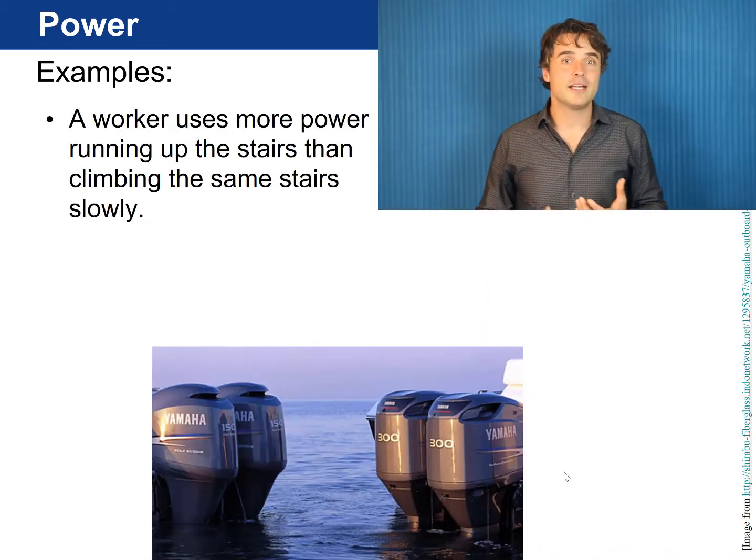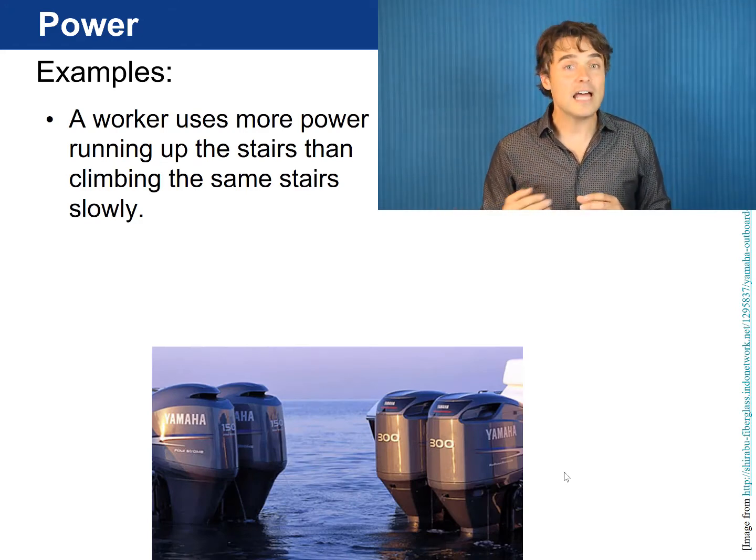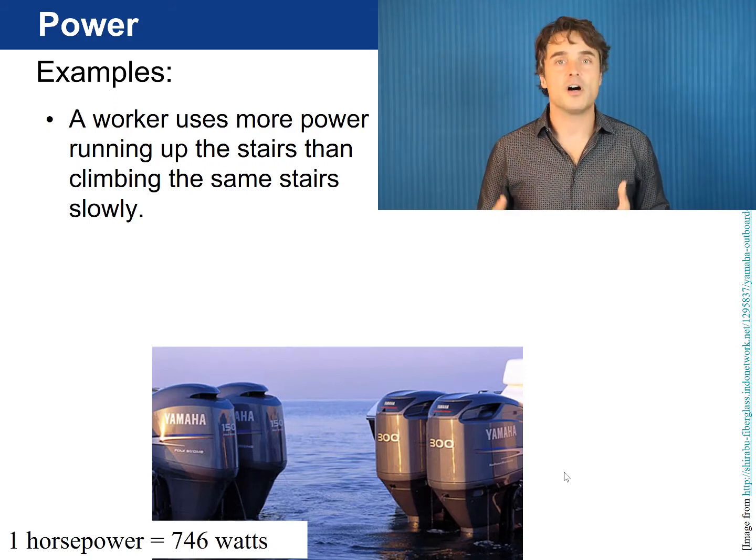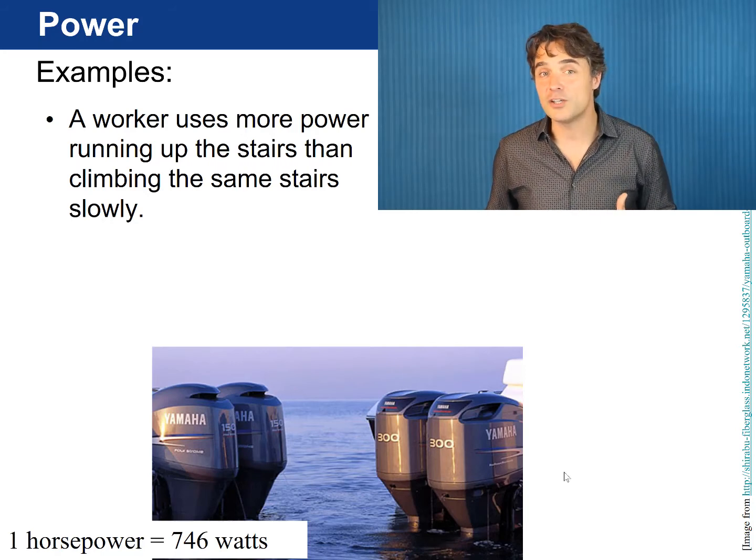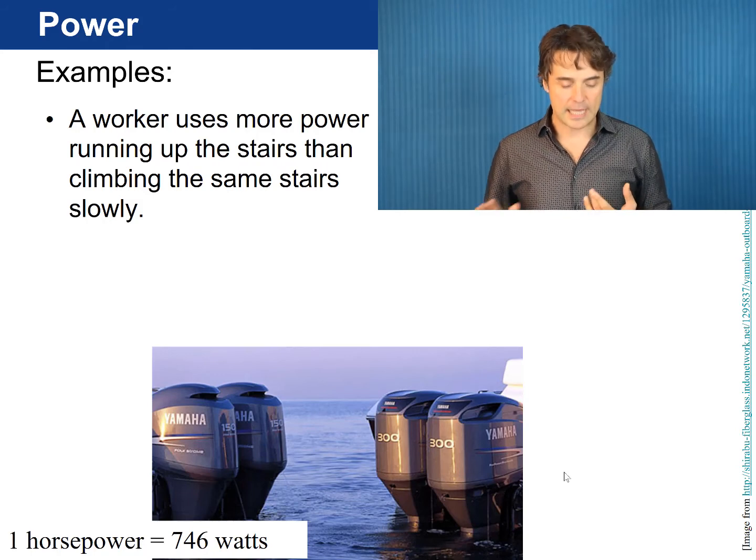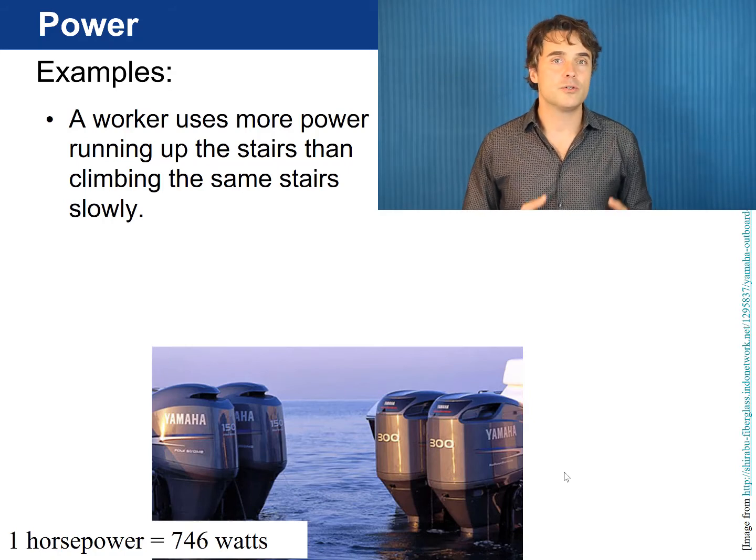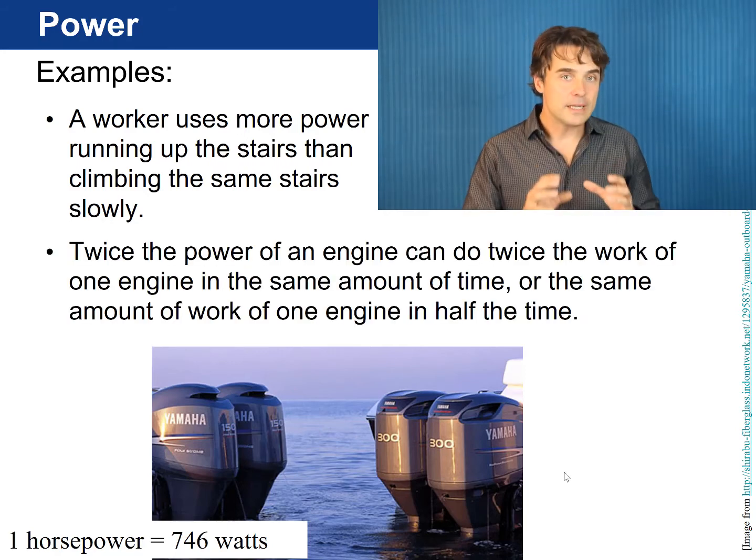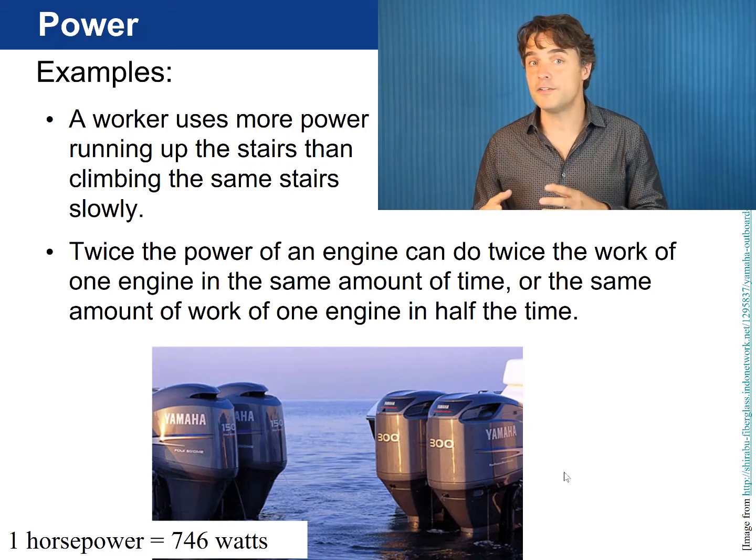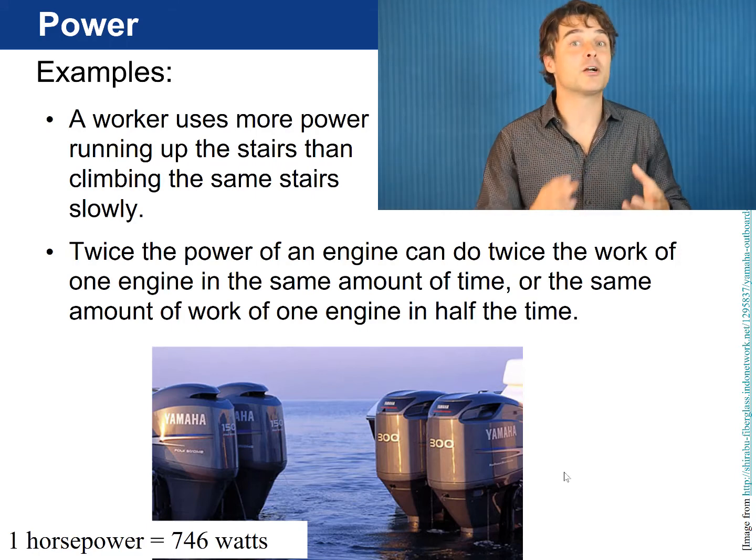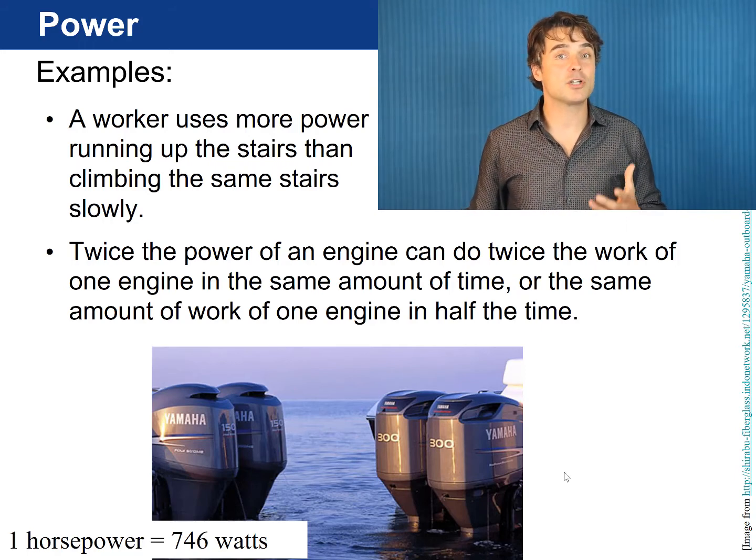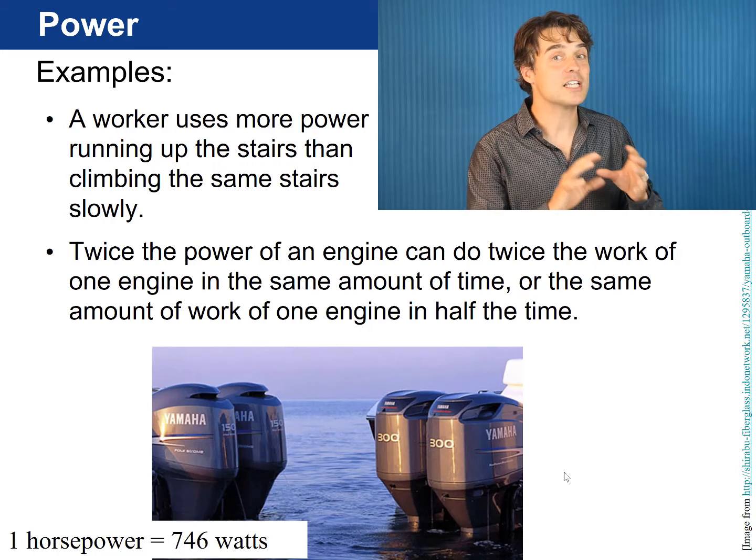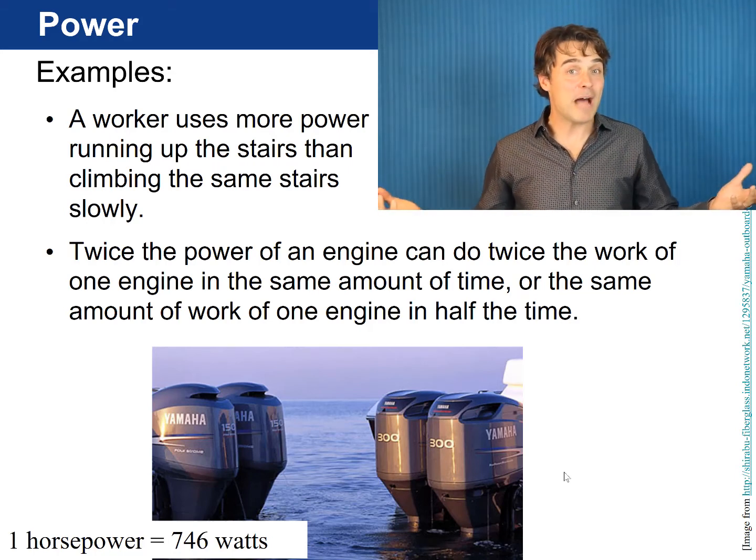An example of power is that you use more power running up the stairs than you would climbing the same stairs more slowly. Another example, let's think about outboard engines on boats. The power output of an engine is often given in a non-SI unit called horsepower. One horsepower is defined as 746 watts. So, here are two 300 horsepower engines and here are two 150 horsepower engines. So, a 300 horsepower engine can do twice the work of a 150 horsepower engine in the same amount of time, i.e. it could push a bigger boat. Or, a 300 horsepower engine could do the same amount of work as a 150 horsepower engine in half the time, i.e. it could push the same size boat twice as fast. That's why water skiers like to have engines with a lot of power, so they can go faster.